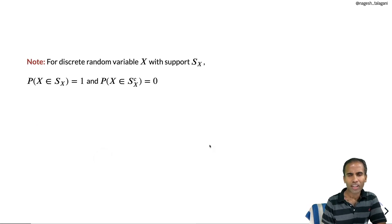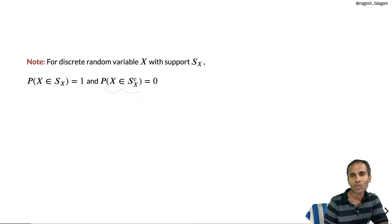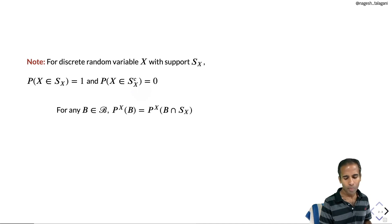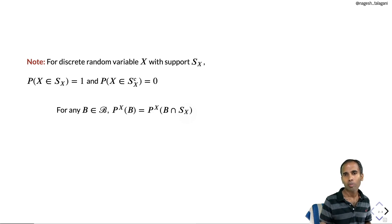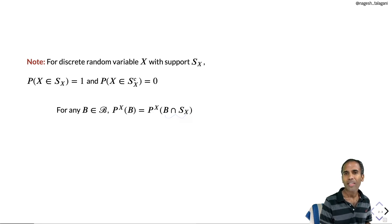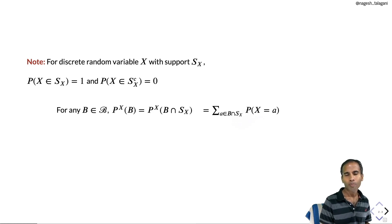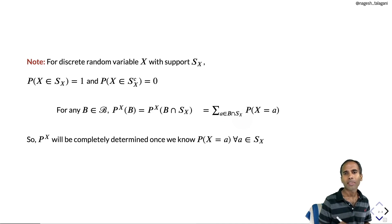For a discrete random variable X with support S_X, the probability of X taking a value within S_X is 1, and the probability of X taking a value outside S_X is 0. For any Borel set B, the probability of B under P_X equals the probability of B ∩ S_X under P_X. Since S_X is finite or countably infinite, B ∩ S_X is also finite or countably infinite, and we can write this as the sum of the probabilities of X equal to a, where a varies over B ∩ S_X.